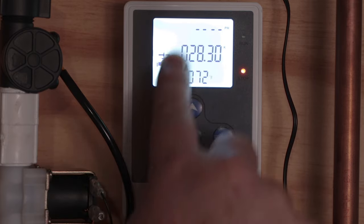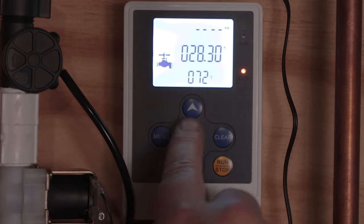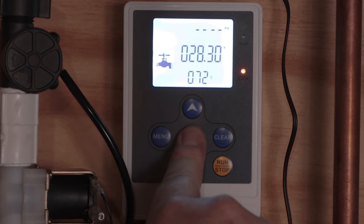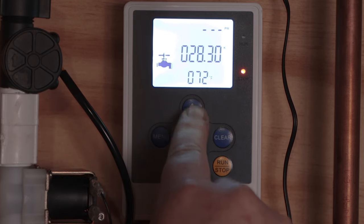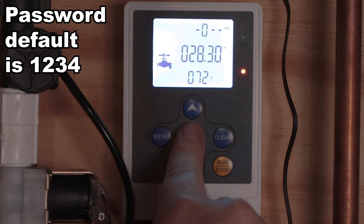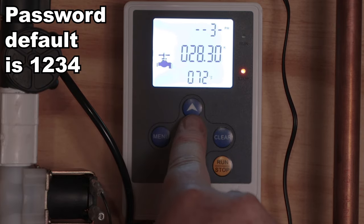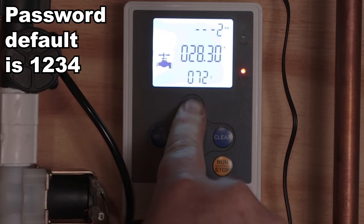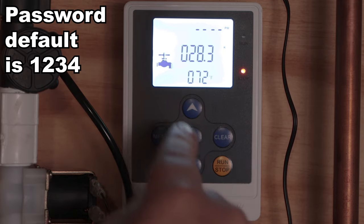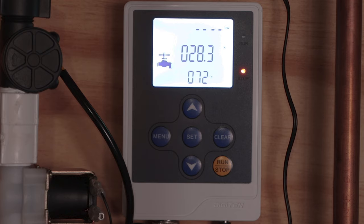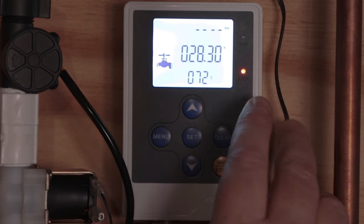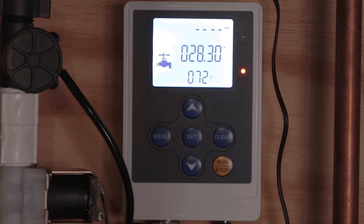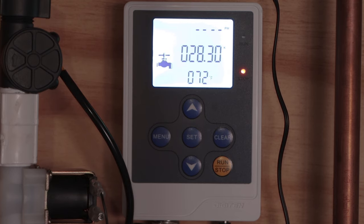Now the way that you change this is when you get to this password, you're going to press and hold the set button down. And then you're going to go one, set button, two, set button, three, set button, four, set button, and then it will let you change the K value. So this is a setting that I would advise you could probably start with this 28.3 K. And that actually was able to exactly dispense one gallon. And I'll show you that here in just a few minutes.